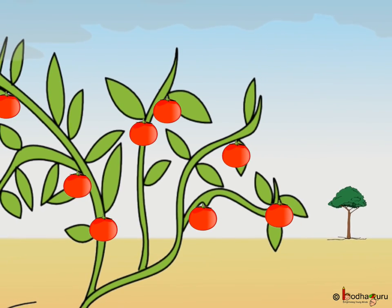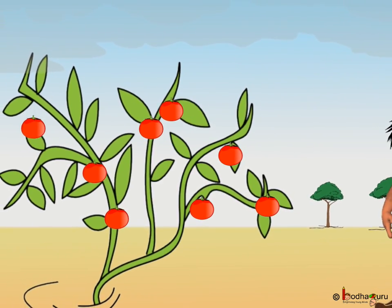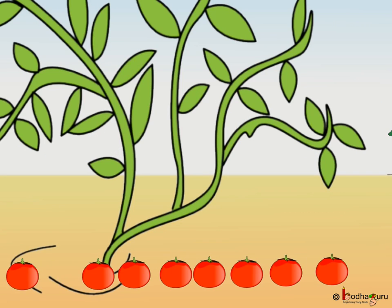It was full of big red tomatoes, juicy tomatoes. Bholla got 1, 2, 3, 4, 5, 6, 7, 8. Yes, he got 8 tomatoes.